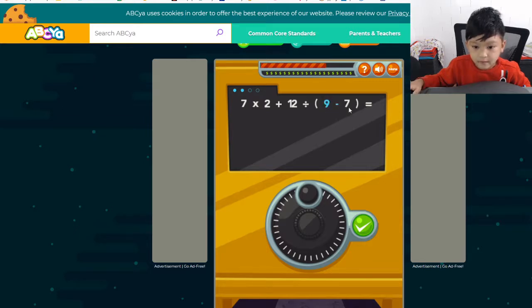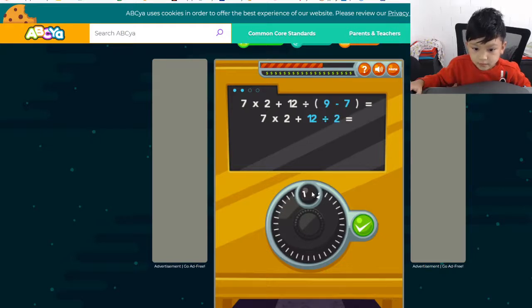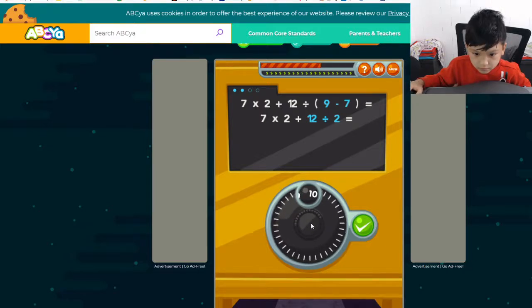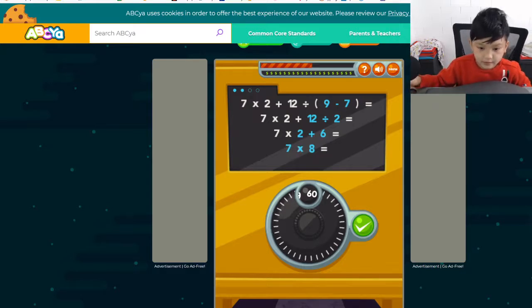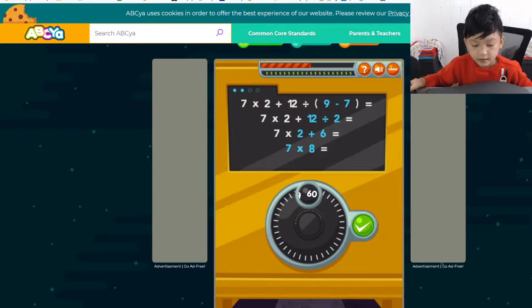Nine minus seven. Twelve divided by two. Okay, there's six. Plus two plus six. Plus six equals eight. There you go. And seven times eight. Eight times five is forty. Eight times two is sixteen.